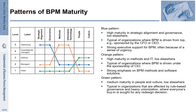The second is the orange pattern, where methods and information technology are very mature, while strategy, governance, as well as people and culture are less developed. This is a typical profile of BPM driven by the CIO. The green pattern is where maturity restricts itself to people and culture — typically an organization affected by rule-based governance and heavy unionization, where we have to rely on people's commitment to get things done.